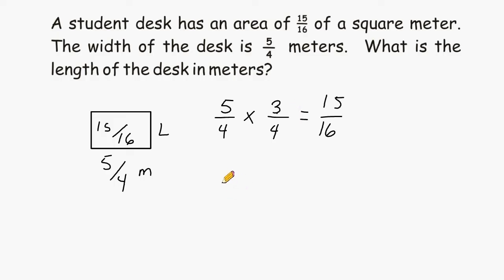Another approach to this problem is by taking the given area, which is 15 sixteenths of a square meter, and dividing that by the given width, which is 5 quarters of a meter. So let's take 15 sixteenths and divide that by 5 quarters, and that's going to give us the unknown length.